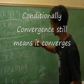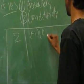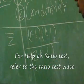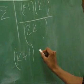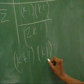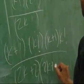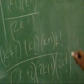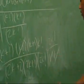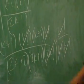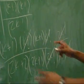Let's get started with the Ratio Test. Our new function is k factorial times k factorial over 2k factorial. Using the Ratio Test procedure: k plus 1 factorial equals k plus 1 times k factorial. The denominator becomes 2k plus 2 times 2k plus 1 times 2k. We multiply by the reciprocal, which gives us 2k factorial over k plus 1 factorial times k plus 1 factorial.